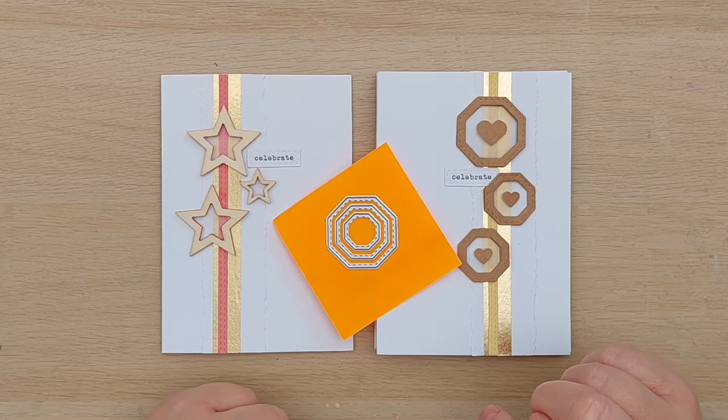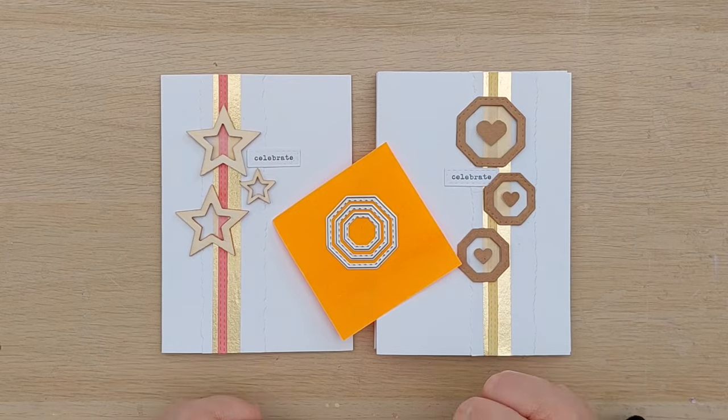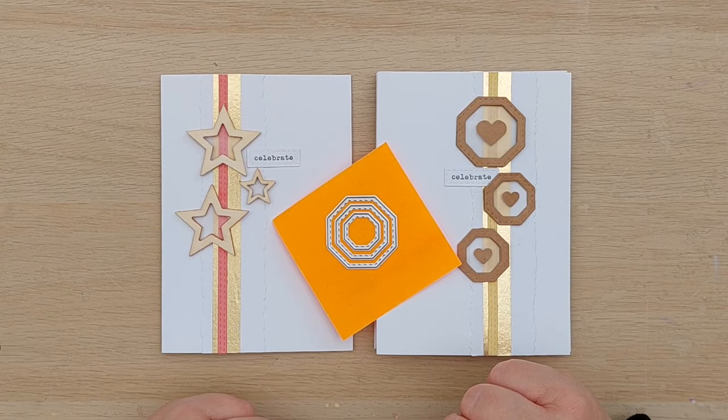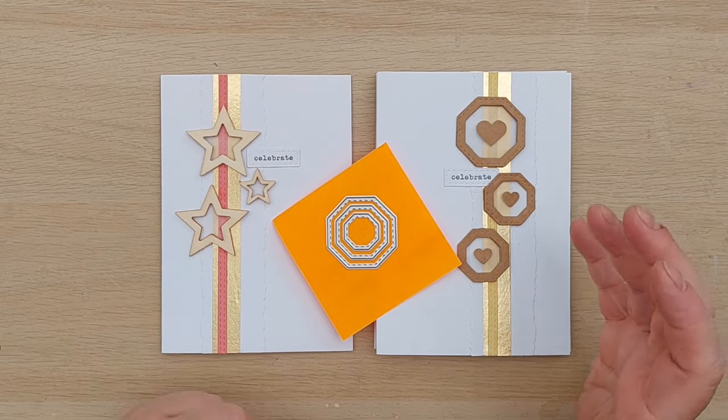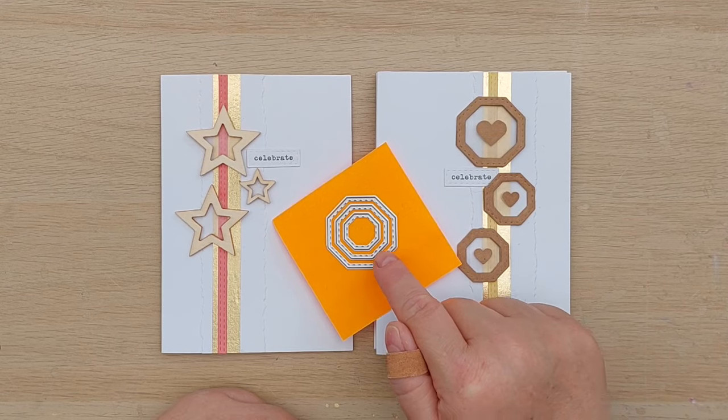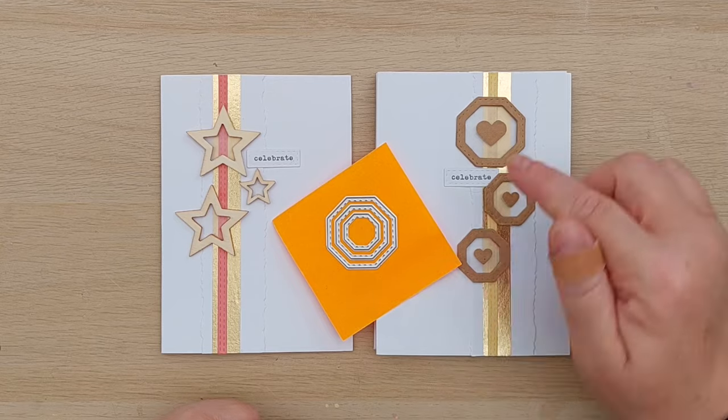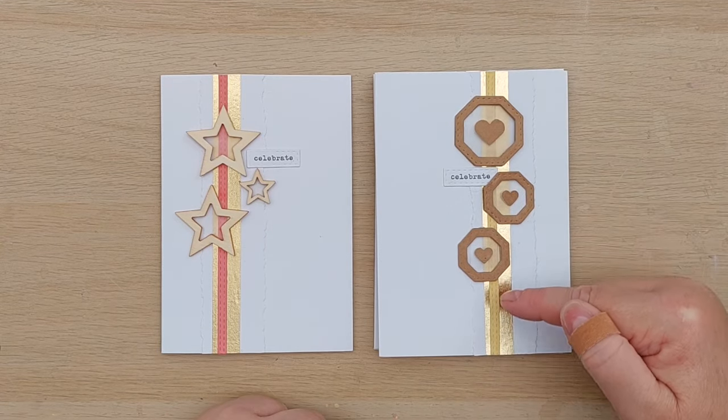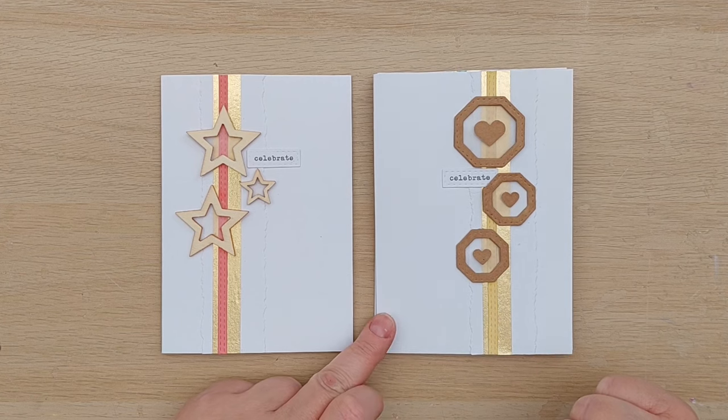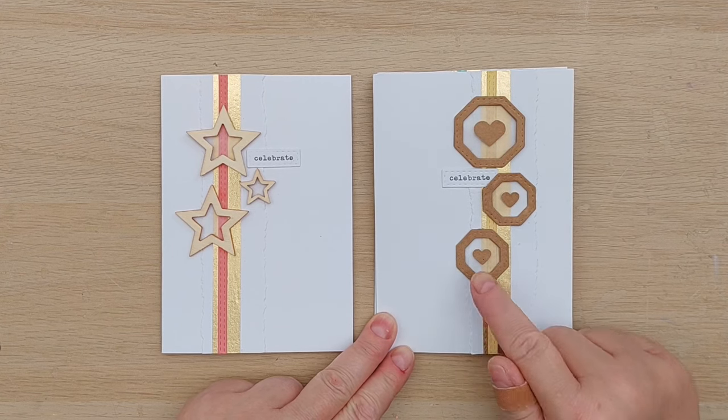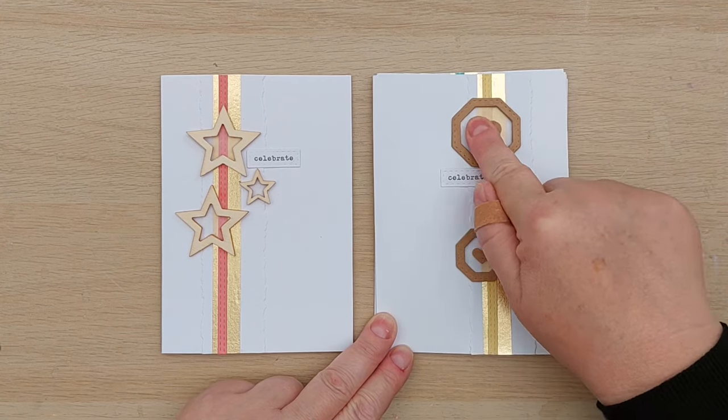The dies I used to make these octagonal frames were octagonal stitched nesting dies, so if you want to cut out a frame just put your nesting dies inside each other on a bit of something sticky, cut them out, and you will get the frame shapes. The color on this strip came from Scattered Straw distress oxide, and I added some hearts inside the octagons for a bit of interest.